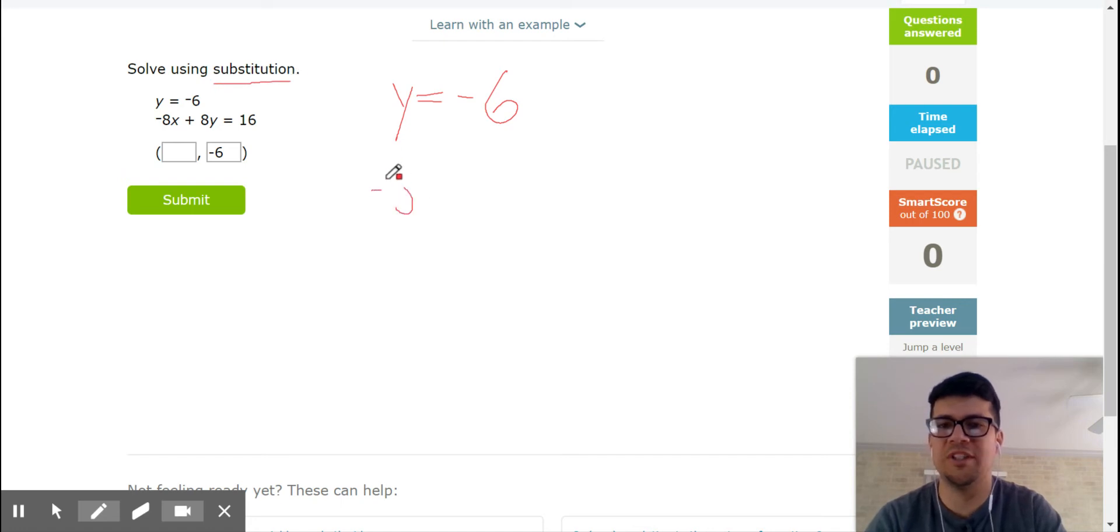I'm gonna work with my second equation, which is -8x. I don't know what x is, we're gonna solve for it. Plus 8 times y, my y is negative 6, it's already been solved for me, should be equal to 16. So when I take whatever this x value I'm looking for, multiply it by negative 8, and add the product of 8 and negative 6, I should get 16.